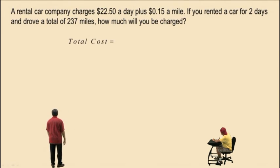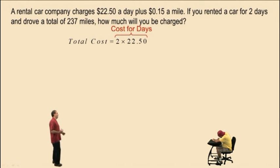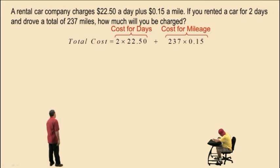We need to find out what our total cost is. Our total cost will be the cost for mileage and the cost for the days. We are renting the car for two days, and each day costs $22.50. So 2 times 22.50 represents the cost for days. And now we have to add the mileage. Well, we drove 237 miles, and each mile cost 15 cents, or 0.15 dollars, and that represents the cost for mileage, 237 times 0.15. Those two costs will add up to the total cost.